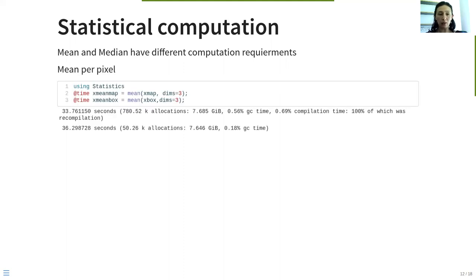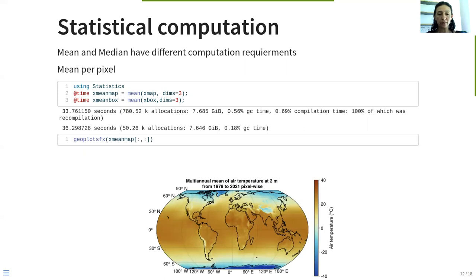We start with the mean per pixel, and what we observe here is that we are having similar computation time for both chunkings, so we are taking between 33 to 36 seconds to compute the mean of 30 years datasets. And this is the output of our computation. We are observing a multi-annual mean for more than 30 years of data.